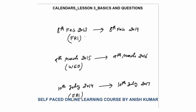Now for an example: 8th February 2013 is Friday. What will be the day on 8th February 2014? Same date to same date, one year gap. Is there a 29th February in that gap? No. So the answer is 1 odd day. Therefore my day would be Saturday, since 365 days ÷ 7 gives remainder 1.